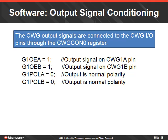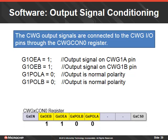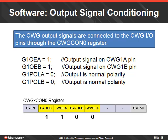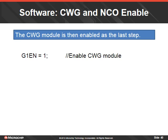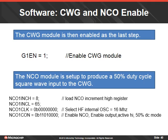Now we'll set up the output signal conditioning. The CWG output signals are connected to the CWG IO pins through the CWG control 0 register. Setting the G1OEA and G1OEB bits to 1 will output the CWG signals on the CWG IO pins. The polarity is set to normal mode for both outputs. The CWG module is then enabled as the last step. The NCO module is set up for a 50% duty cycle waveform input to the CWG — this setup was covered in a separate self-paced module for the numerically controlled oscillator, shown here for reference.